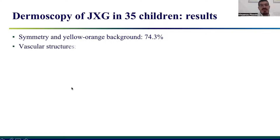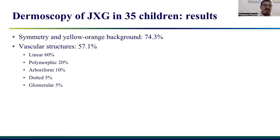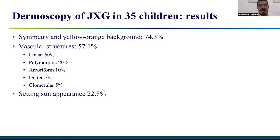Incredibly, the majority of lesions presented vascular structures. Among them, vessels were linear in most cases, polymorphic in 20%, arborizing in 10%, dotted in 5%, and glomerular in the remaining 5%. The setting sun appearance, considered the most specific and characteristic appearance of juvenile xanthogranuloma, was seen in only 22.8% of cases — so not so common.